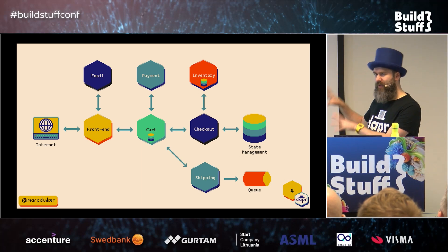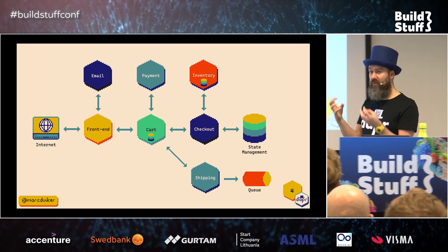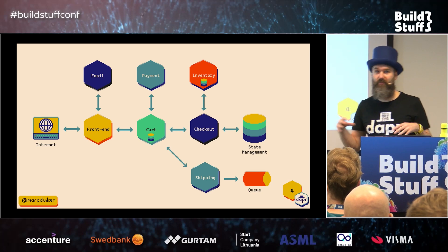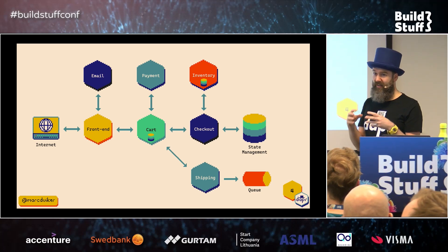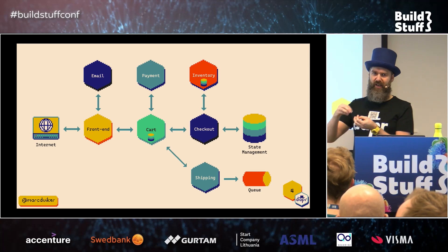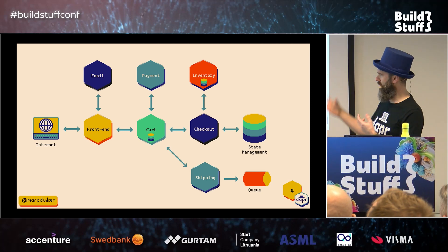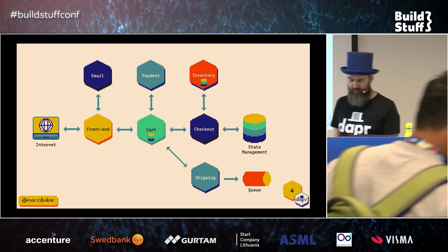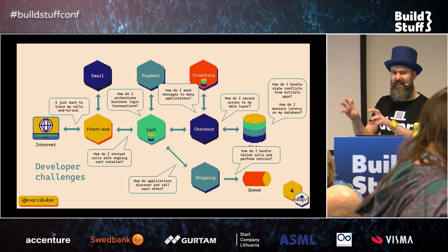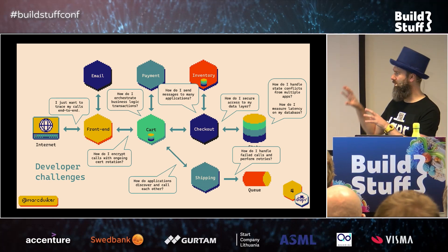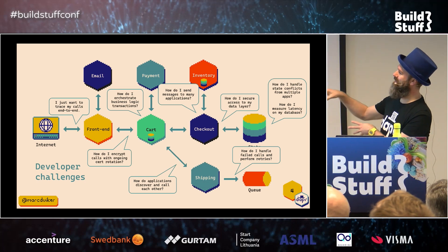A lot of especially big organizations are building distributed systems with multiple services — sometimes called microservices — and they all need to interact with each other in a safe way. They also need to communicate with external resources like databases or message brokers. But if you're in this kind of business, it's actually quite challenging to make a proper architecture because there are quite a few developer challenges with distributed systems.